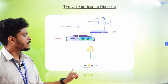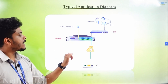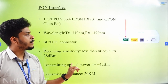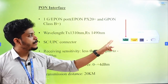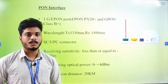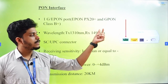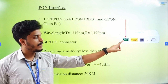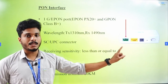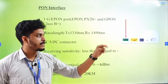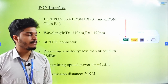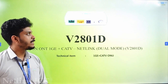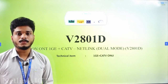These are the key features. This is a typical application diagram. The ONU supports G-PON and E-PON. CATV is also supported. There is no Wi-Fi available. We can use Bridge mode on the LAN port, or use Router mode to access the internet via the Ethernet port. This is the V2801D. Thank you for watching this section.